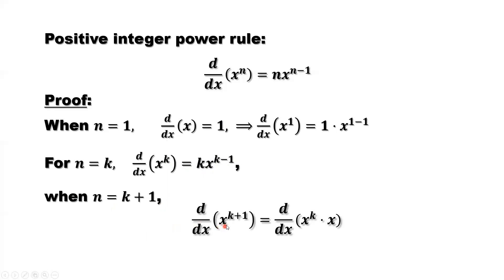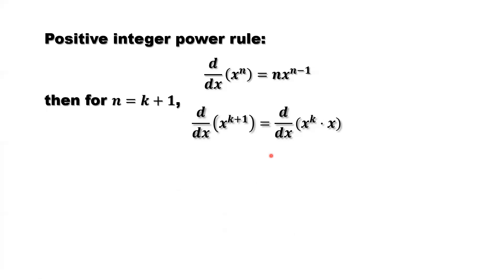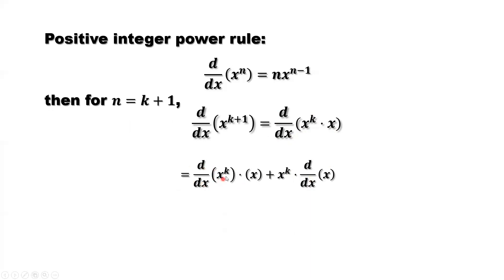The derivative of x to the power k plus 1: we can rewrite k plus 1 as the product of x to the power k times x. Using the product rule from calculus, we take the derivative of the first term times the second term, plus the first term times the derivative of the second term. The derivative of x to the power k — using our assumption when n equals k — equals k times x to the power k minus 1.